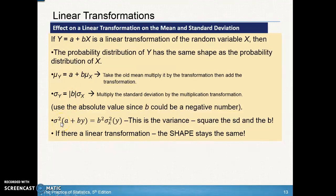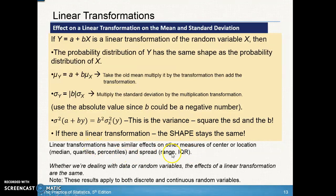Now for the variance: if the transformation is A + BY, keep in mind that variance is the standard deviation squared, so we'd have to square B. To get the new variance, square the old standard deviation and square the multiplier B, but do nothing with A, since it doesn't change the standard deviation or the variance. Linear transformations have similar effects on other measures of center — the median, quartiles, and percentiles all follow the same rule.